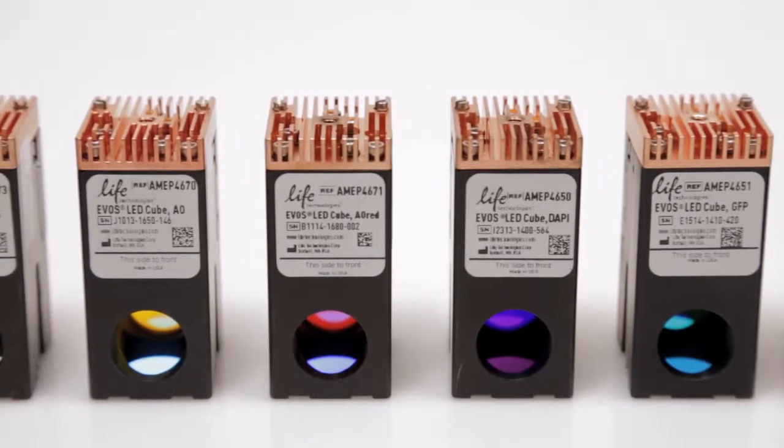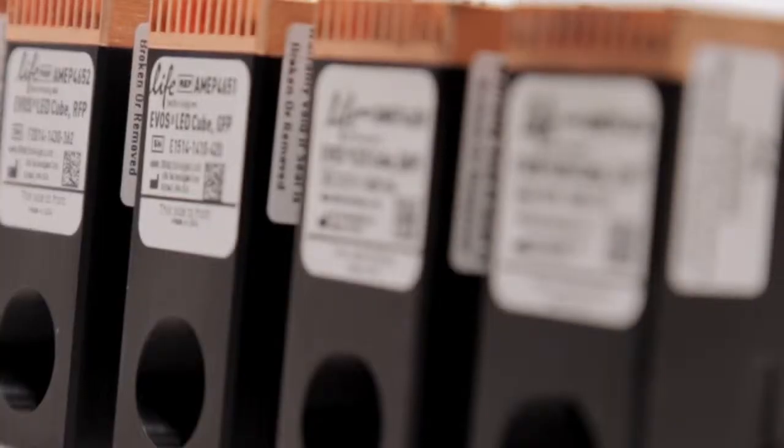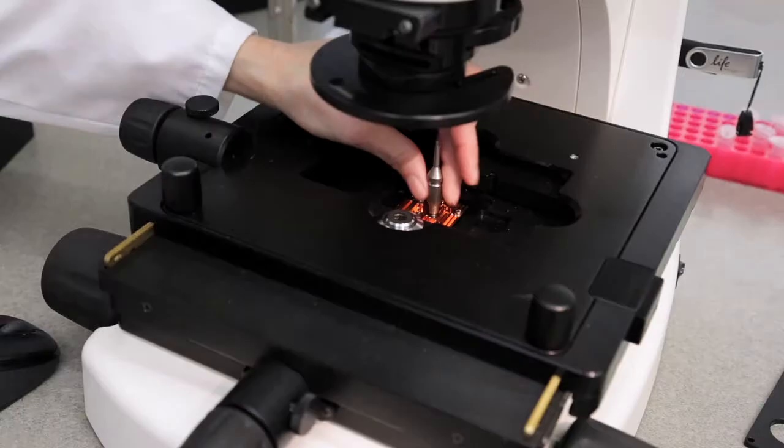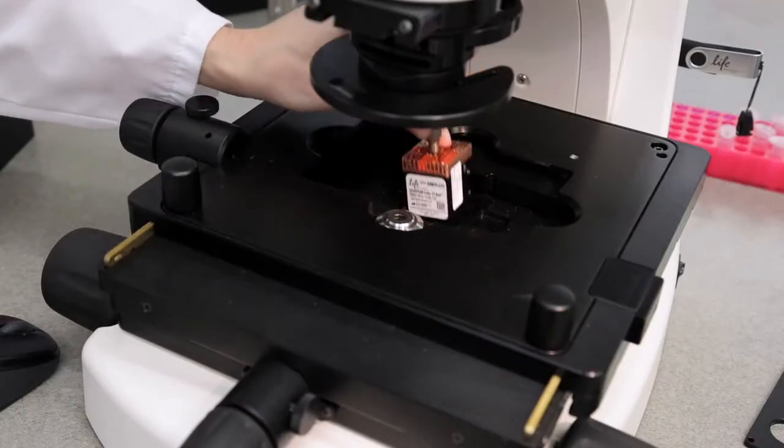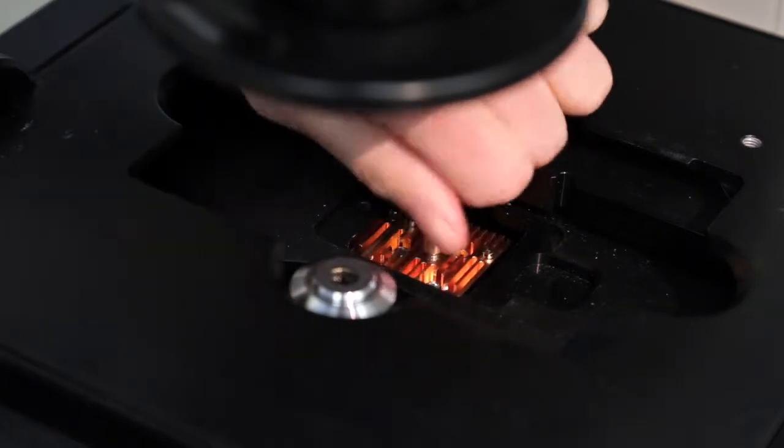Over 20 EVOS light cubes are available for a wide variety of research applications, and each EVOS FL system can hold up to 4 light cubes. To change light cubes, simply pull out the light cube with the provided tools and replace it with your new light cube of choice.